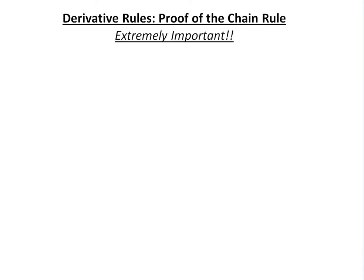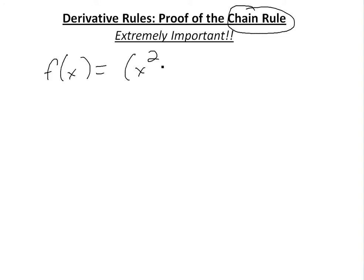It's time for another math easy solution to discuss some more derivative rules. We're going to look at the proof of the chain rule. This is an extremely important derivative rule. I'll start off by writing f(x) equals a random equation, say (x² + 1) to the power of 100.